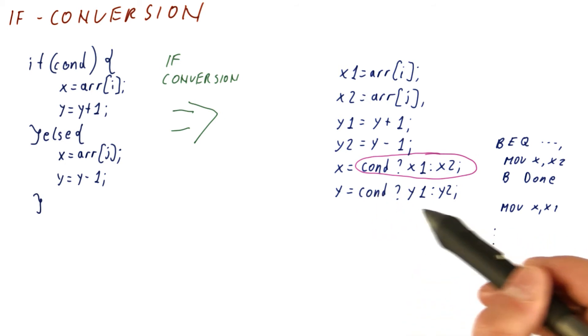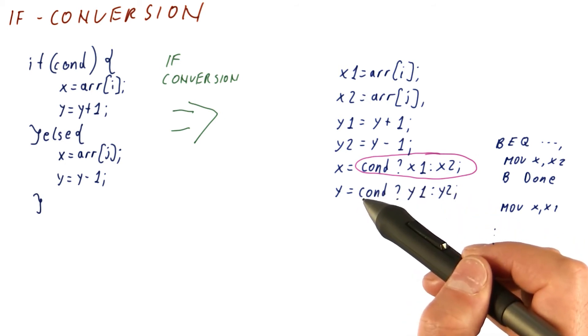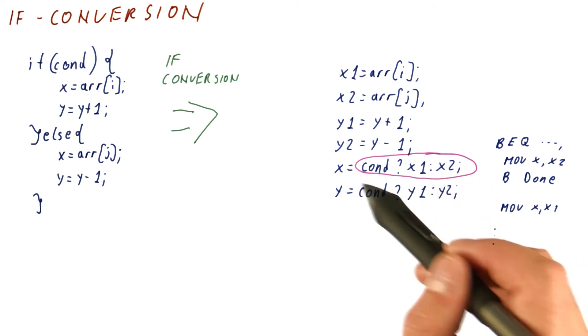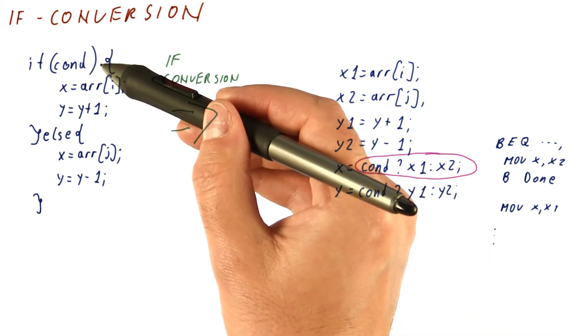So unless we have some sort of a correlating predictor, like for example the global history predictor, we will possibly have two mispredictions here instead of the one we might have had.